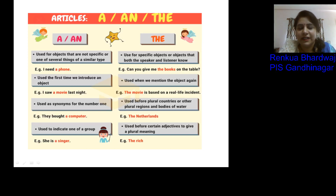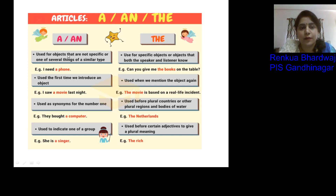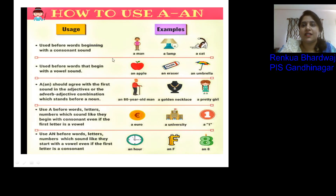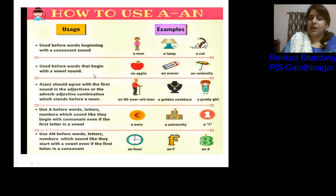For articles: 'the' is used for specific objects; 'a' and 'an' are used for non-specific objects. For example: 'A man is a social animal' versus 'The man who is in a black coat.' We use 'a' before words beginning with a consonant sound and 'an' before words beginning with a vowel sound.